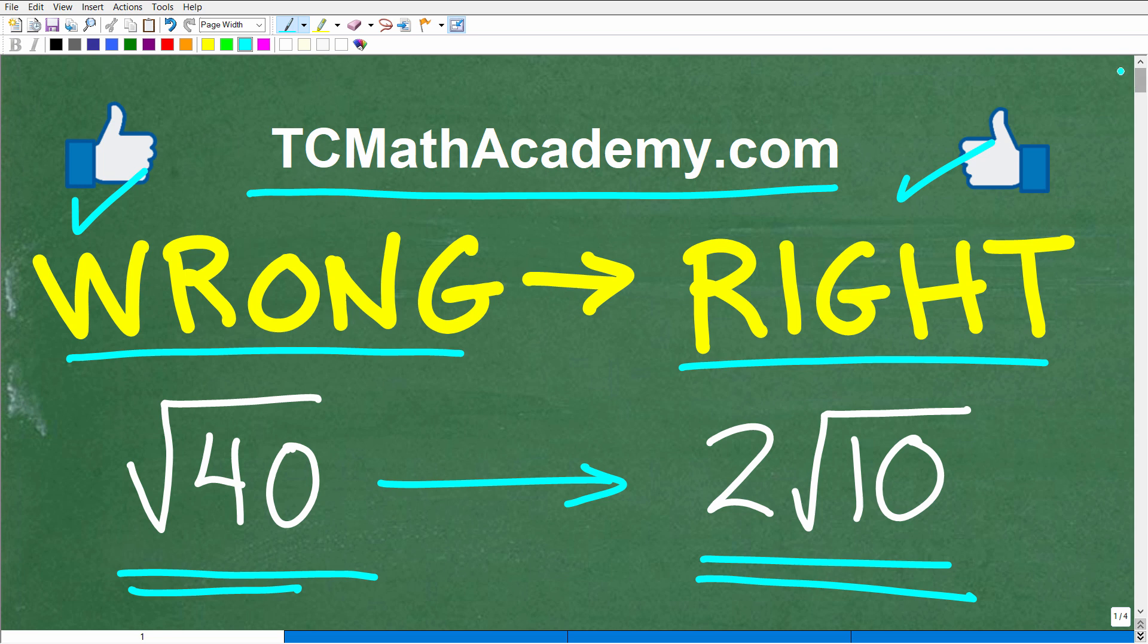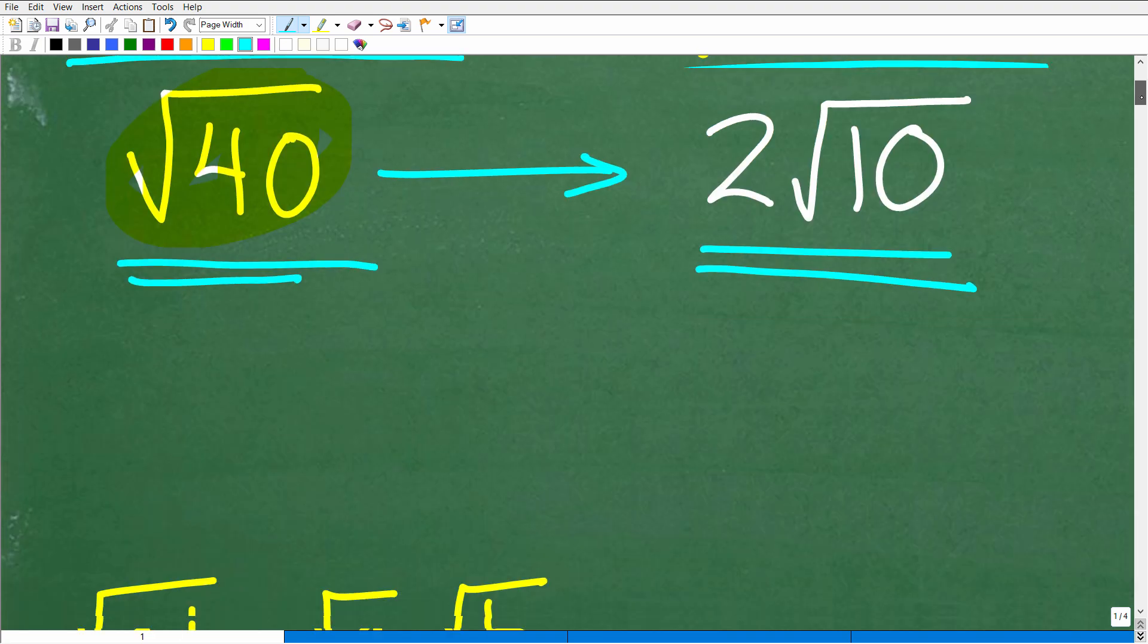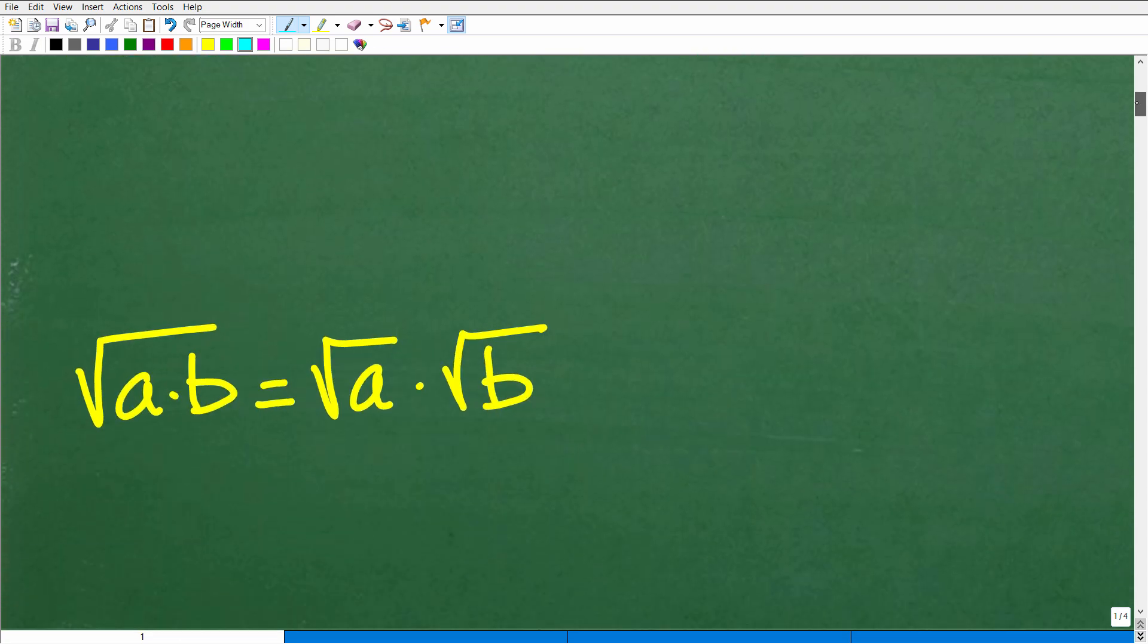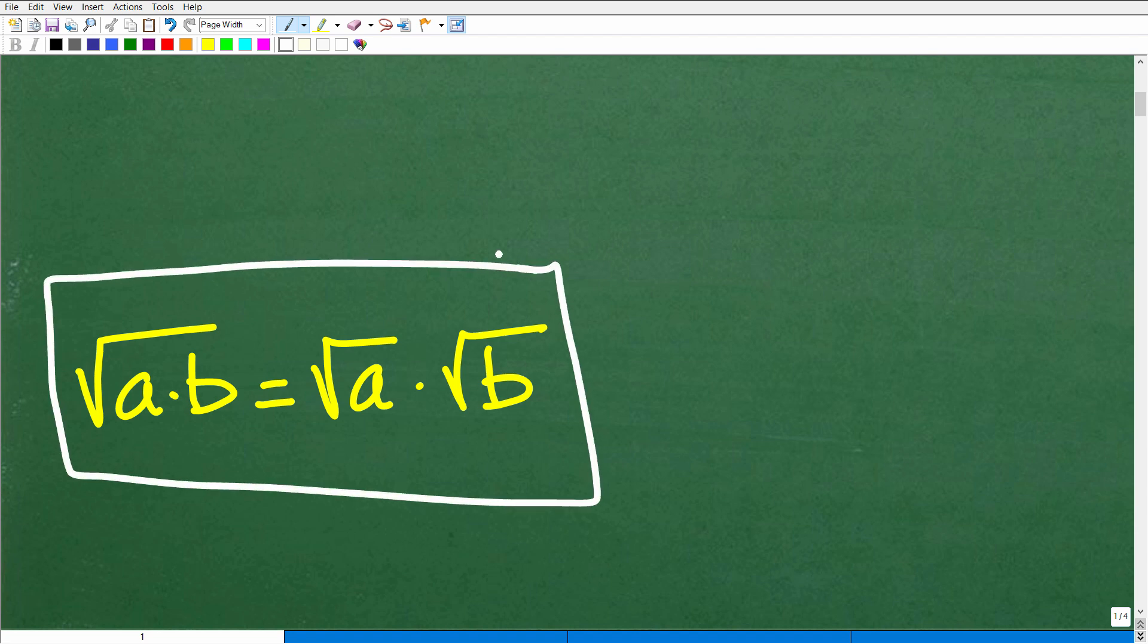So let's go ahead and get into this right now. We have the square root of 40. What we don't want to do is go into our calculator and get a decimal. So put that calculator away. And let's just quickly look at the reason why we can go from the square root of 40 to 2 times the square root of 10. And that reason has to do with this very specific property of square roots.